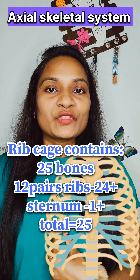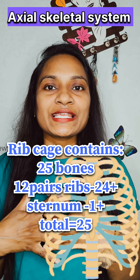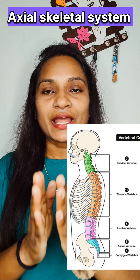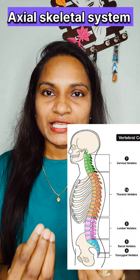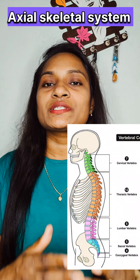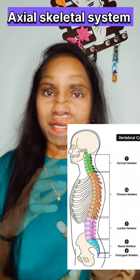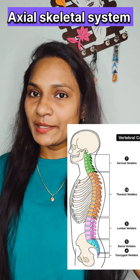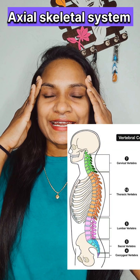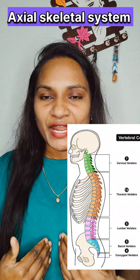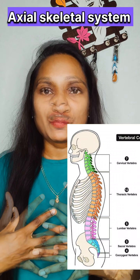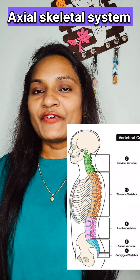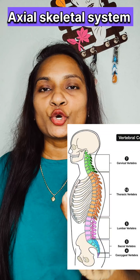In the axial skeletal system, those 80 bones are divided into three parts: skull bones, ribcage, and vertebrae. The skull bones contain 29 bones total — 14 facial bones, 8 cranial bones, 6 ear ossicles (two pairs, each pair containing 3), and one hyoid bone. So 14 plus 8 plus 6 plus 1 equals 29 bones.